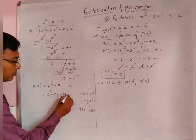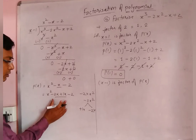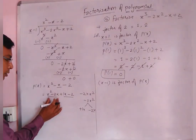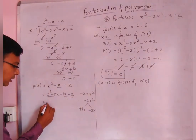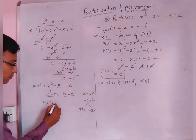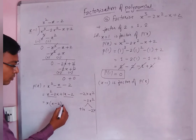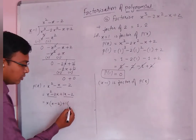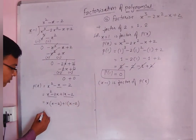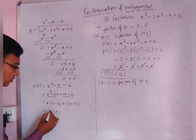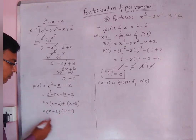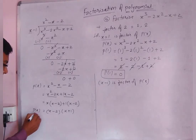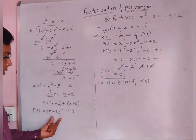We split minus x into minus 2x plus 1x. So x squared minus 2x plus 1x minus 2. Taking common from the first two terms, x is common: x times x minus 2. From the last two terms, 1 is common: 1 times x minus 2. So x minus 2 is the common factor, and the uncommon factor is x plus 1. Therefore, p of x equals x minus 2 times x plus 1.